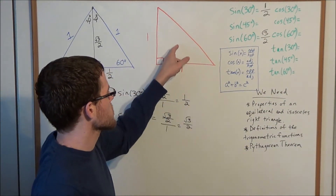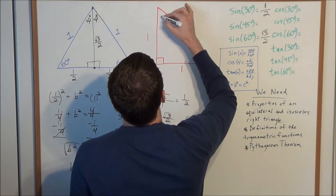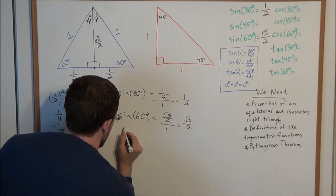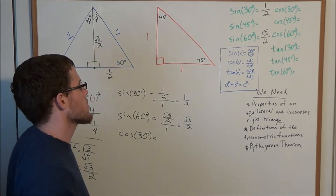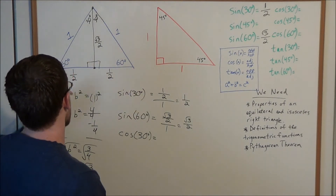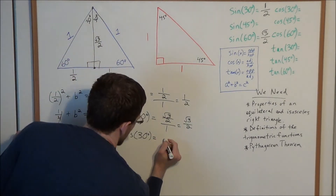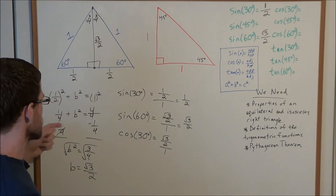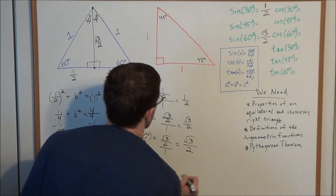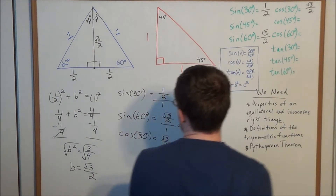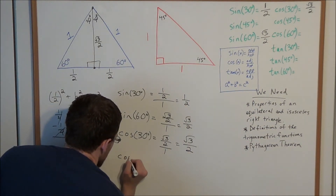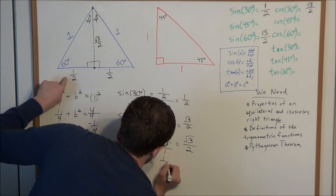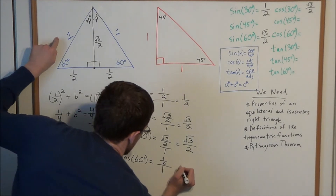I'm going to skip sine of 45 for now since we'll need the isosceles right triangle for that. Moving to cosine and tangent for 30 and 60 degrees: cosine is the ratio of the adjacent side to the hypotenuse. Adjacent to the 30-degree angle is the square root of three over two, divided by one, so cosine of 30 equals the square root of three over two. Adjacent to the 60-degree angle is one half divided by one, so cosine of 60 equals one half.